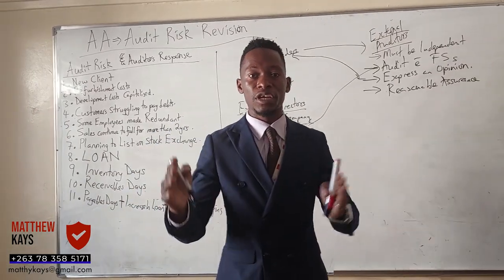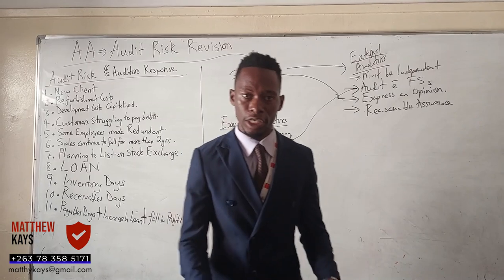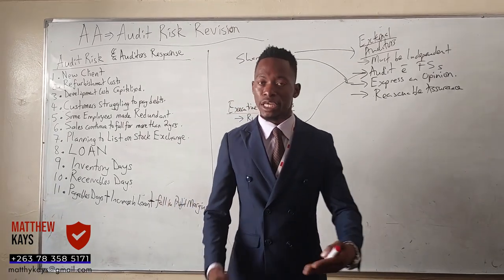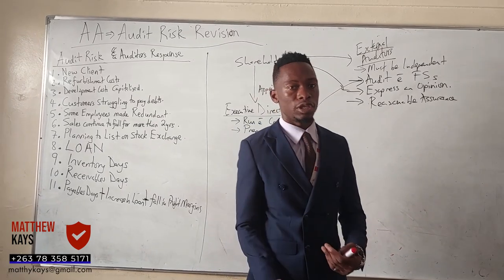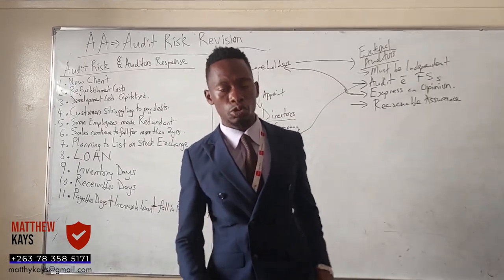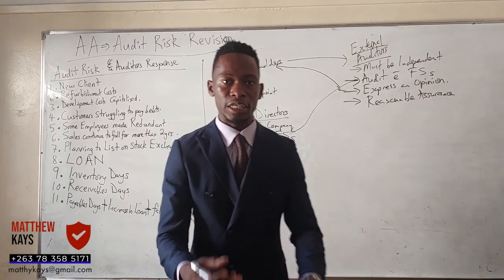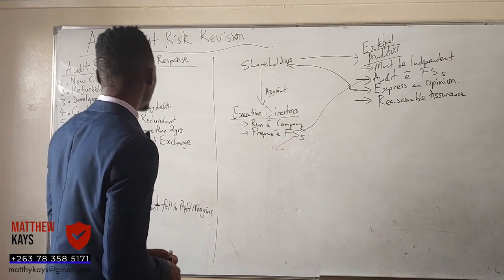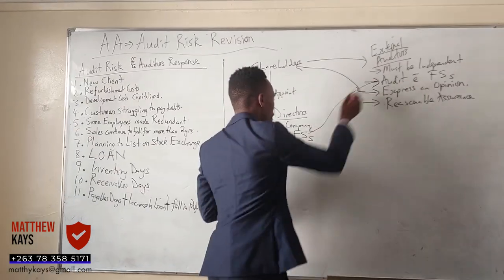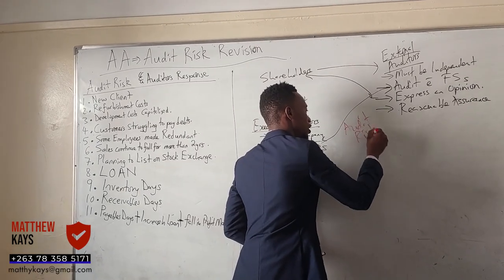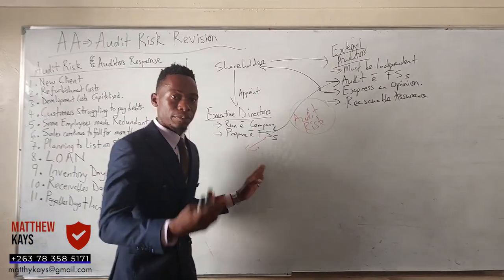The financial statements are not only for shareholders. Different users want to know them: tax authorities need to know the profit to collect tax; banks and finance providers look at financial statements before giving money. Audited books enhance the credibility of financial statements. When the auditors audit the financial statements, there can be audit risk — so what is audit risk?